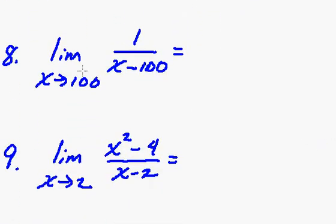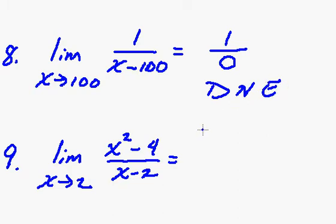Looking at number eight, now this one's going to be a little bit different. As I plug 100 in, I end up getting one over zero because 100 minus 100 is zero. Now we cannot divide by zero here and so this thing becomes undefined. Therefore we say that the limit does not exist and in class you may see it denoted as DNE where the limit does not exist.